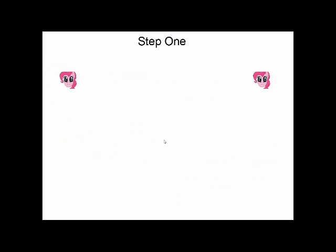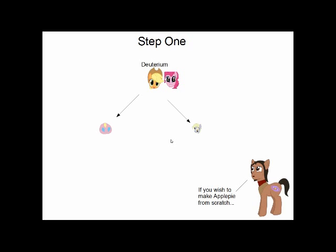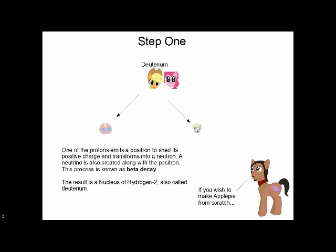Step 1. The two protons come together, and through the strong force bind together. This is unstable, though. So one of them spontaneously emits a positron, shedding its positive charge and becoming a neutron. A neutrino is also generated at this point. This process is known as beta decay. The result of this is a nucleus of hydrogen-2, also called deuterium, consisting of one proton and one neutron.